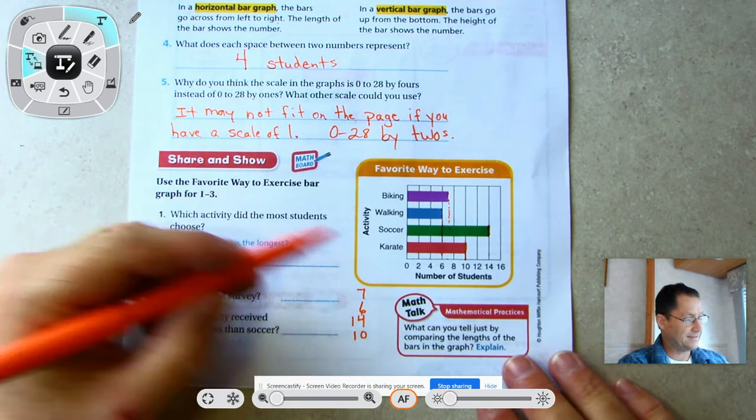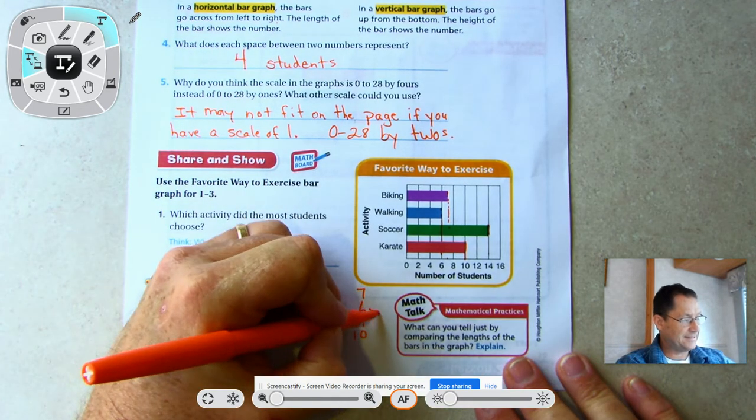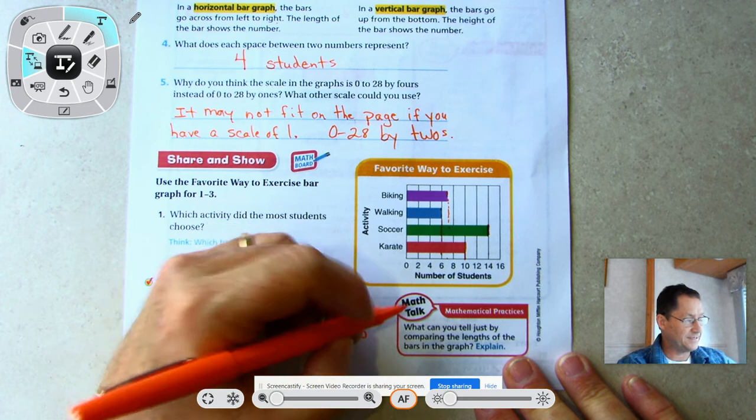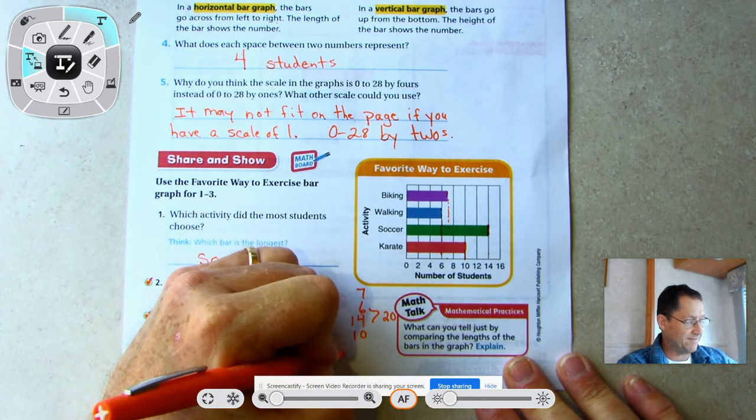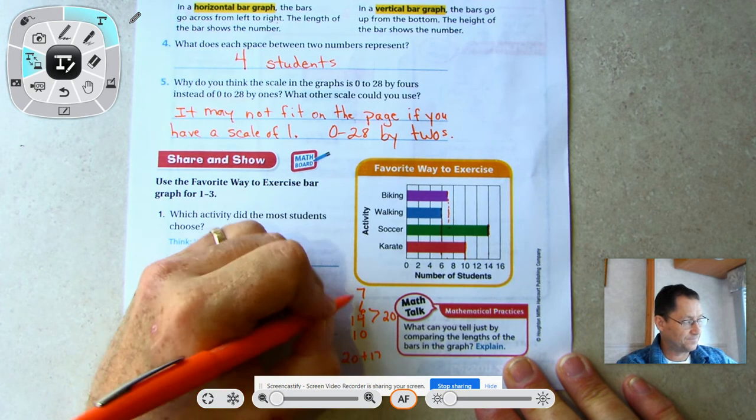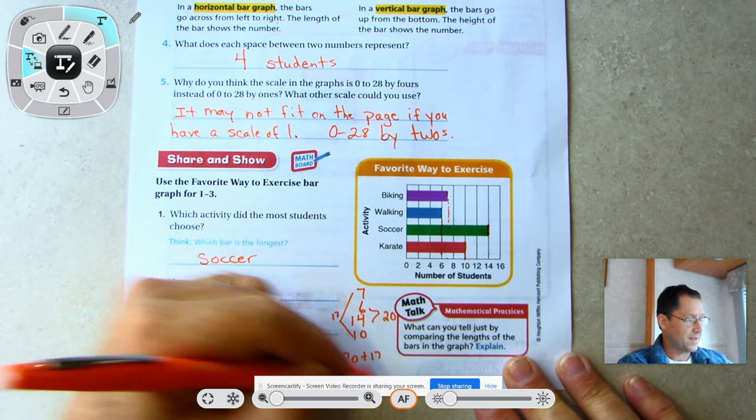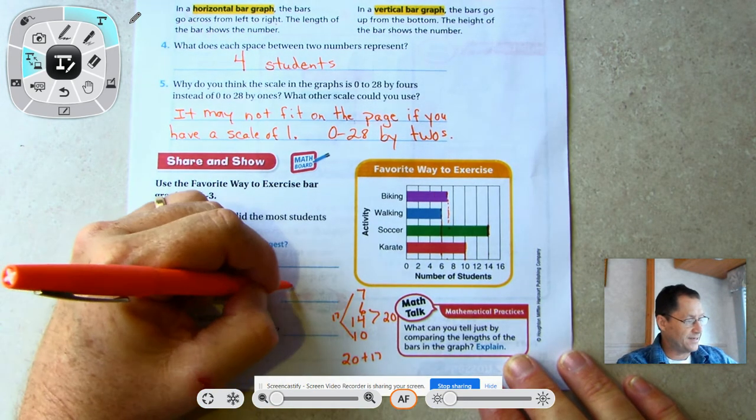Biking is seven, walking is six, soccer is 14, and karate is 10. Now we're going to add these together - 6 and 14 is 20, and 10 and 7 is 17. 20 and 17 is 37.